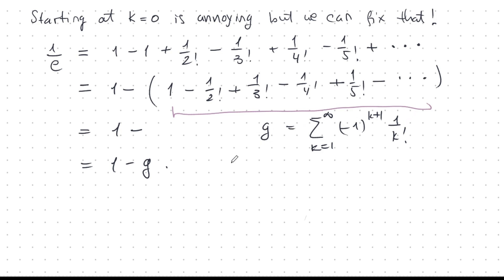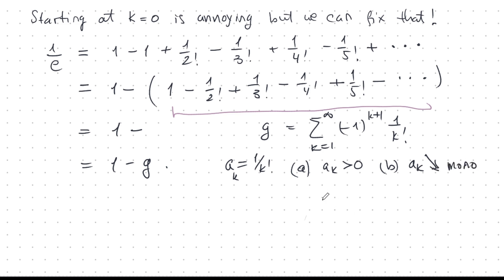Now G is exactly the kind of alternating series we've been studying. Let A_k equal 1 over k factorial. We verify the three conditions: first, all A_k are positive; second, the A_k are monotone decreasing; third, the limit of A_k as k goes to infinity is zero. All three conditions hold, so we can apply all of our theorems about alternating series — including that even partial sums are below G and odd partial sums are above G.